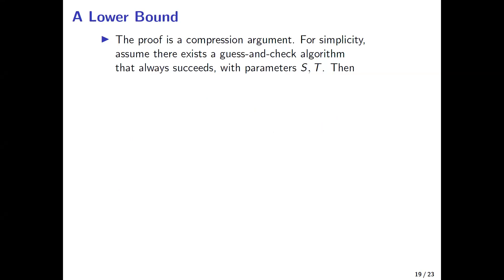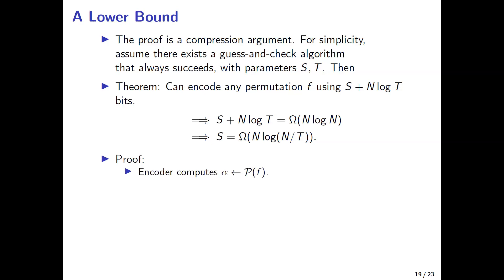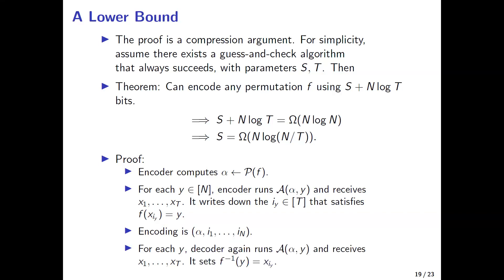This property — having T candidate inverses defined by the preprocessing and the challenge, which you can just check — is a nice property. We call this class of algorithms guess-and-check algorithms, and we showed that this simple algorithm is asymptotically optimal among guess-and-check algorithms. The proof is a compression argument: if you have a guess-and-check algorithm that always succeeds with parameters S and T, you can encode any permutation using S plus n log T bits. Since you need n log n bits to store a permutation, you immediately get the lower bound. The encoding writes down the preprocessing, and for each y, runs the online algorithm to get the T candidate inverses, then writes down the index of the one that's actually an inverse.